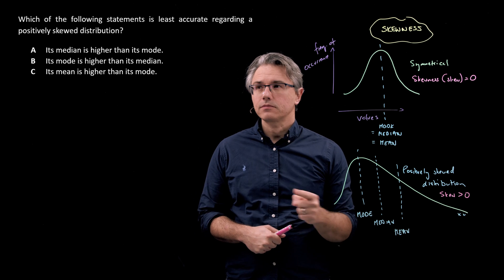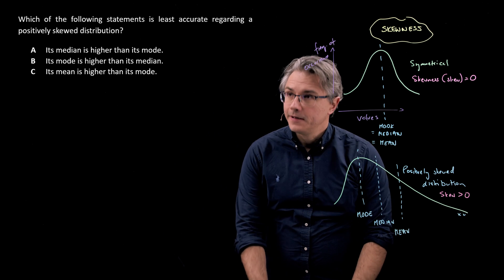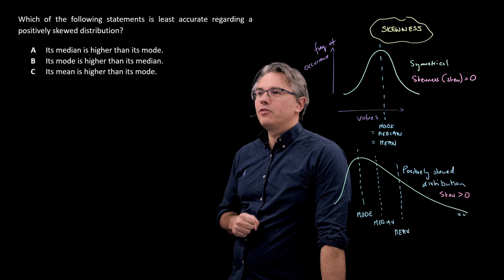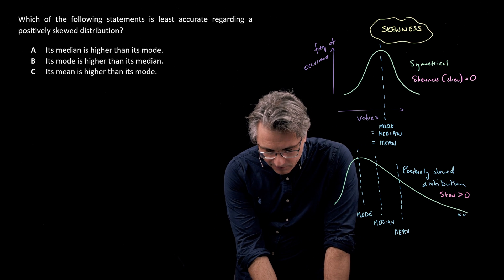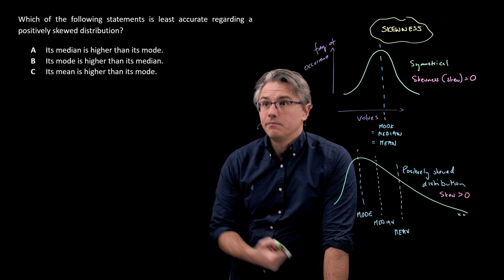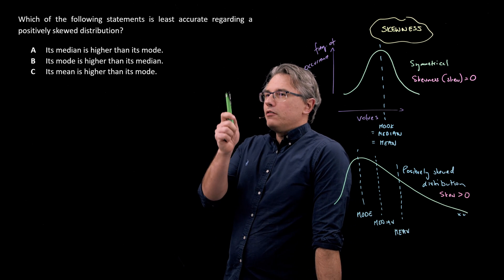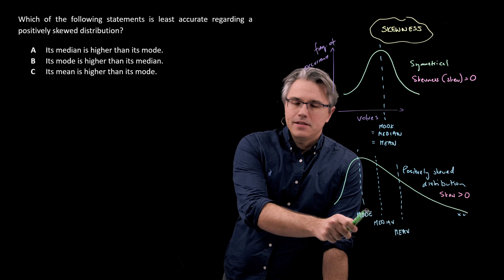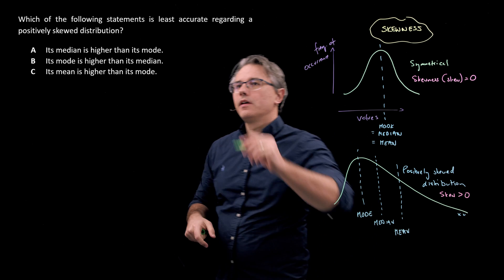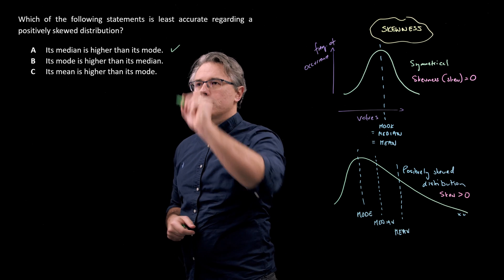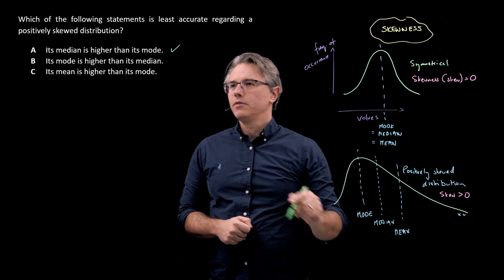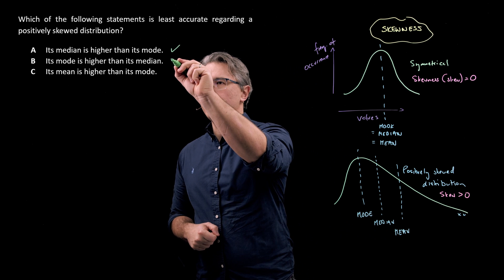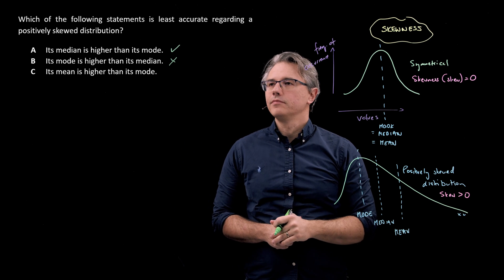Okay, now let's see what answer corresponds to this observation. We're looking for the one which is least accurate. Let's appreciate that. Its median is higher than its mode - that one, A, is correct. Its mode is higher than its median - well that's not correct. It can't be right if the first one is right.